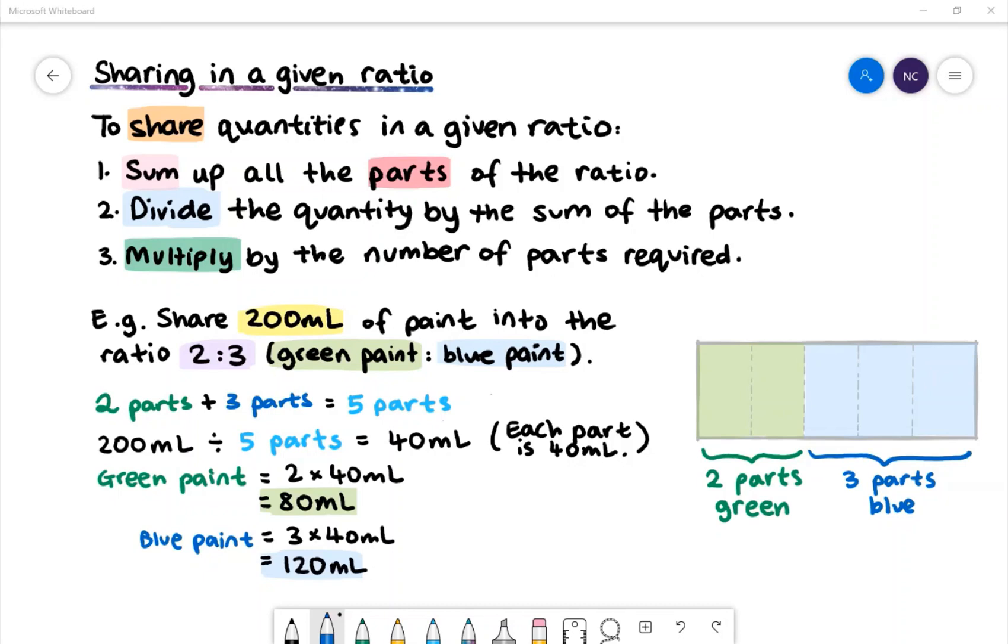First, we will sum up the parts of the ratio. Take a look at the diagram on the right. We have 2 parts of green and 3 parts of blue. Altogether, there are 5 parts.